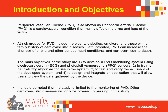As a result of this research gap, the main objectives of this study are to develop a PVD monitoring system using ECG and PPG sensors so that the monitoring system will be non-invasive in nature; to train a neurofuzzy algorithm for use in the system to determine the patient's ABI, which stands for ankle-brachial index, as the main variable used in determining whether a patient has PVD; and to test and verify the accuracy of the developed system using various statistical treatments, and to design and integrate an application that will allow users to view the data gathered by the device.